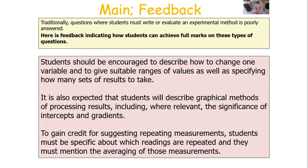Traditionally, questions where students must write or evaluate an experimental method are poorly answered. Here is some feedback from examiners on how students can achieve full marks. Students should be encouraged to describe how to change one variable and to give a suitable range of values — you've got to give numerical values as well as specifying how many sets of results to take. It is also expected that students will describe graphical methods of processing results, including where relevant the significance of intercepts and gradients. Always think about what your y-intercept, x-intercept, and gradient of your graph are going to tell you.